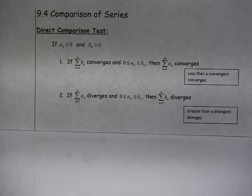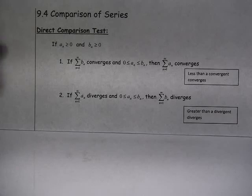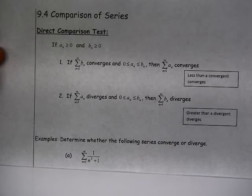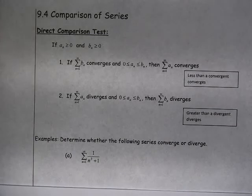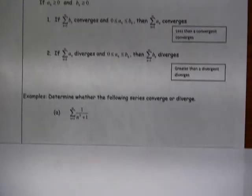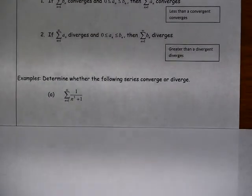On the other hand, if I know that series a diverges and each term in b is greater than the terms in a, then I know that series b diverges as well. The idea here is that we want to think of a series similar to the one we're looking at that we happen to know converges or diverges, and then we can compare ours to that and see if that gives us more information.